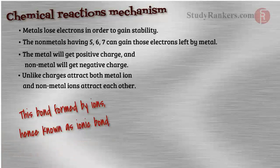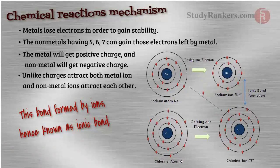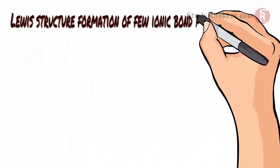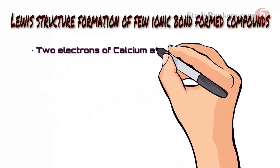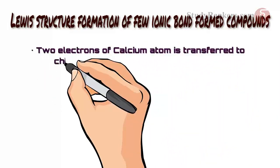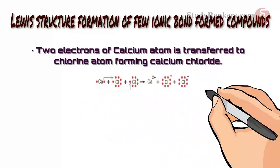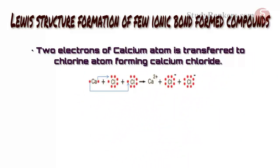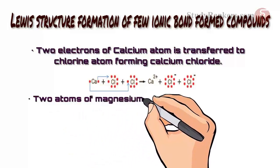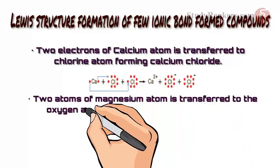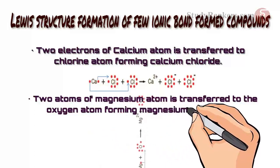Here is an example of formation of sodium chloride by the same process mentioned above. Here, the Lewis structure formation of few ionic bond formed compounds are given. Two electrons of calcium atom are transferred to chlorine atoms forming calcium chloride. Similarly, two electrons of magnesium atom are transferred to the oxygen atom forming magnesium oxide compound.